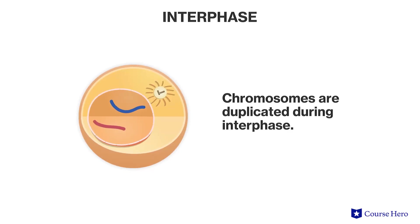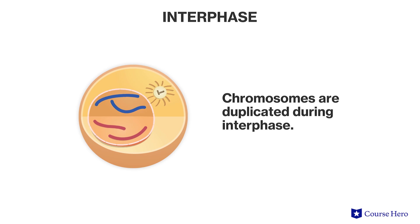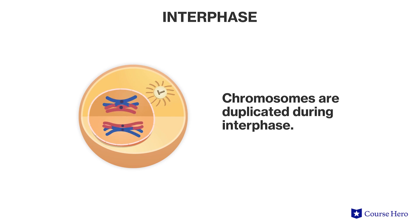Let's review the steps of meiosis one and two. Interphase is a step that occurs before meiosis, and it's a period of cell growth and chromosome duplication. By the end of interphase, each chromosome has duplicated and consists of two identical chromatids.